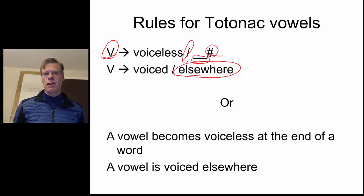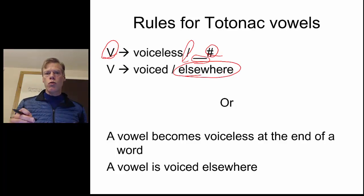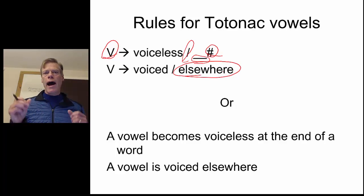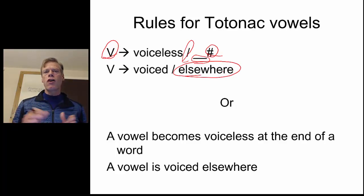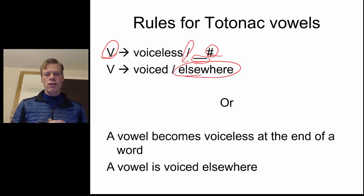And that's it. So what we've accounted for is the fact that voiced and voiceless vowels — for each one, the AH and the AH, or the E and the E — are allophones of the same phonemes. The difference is just the place, so it's complementary distribution. And when we find complementary distribution, we write a rule to account for that distribution.